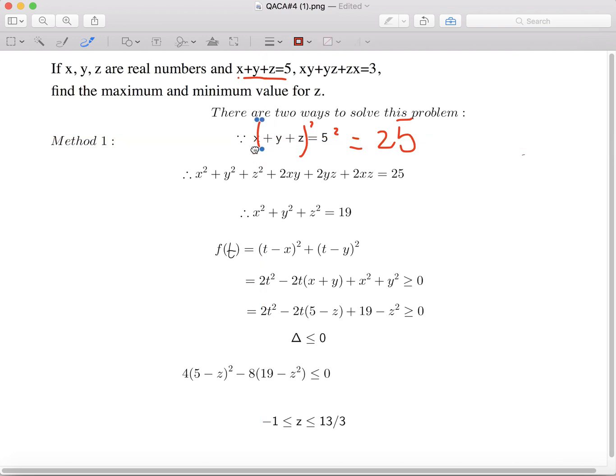If we FOIL the left side, we can have x squared plus y squared plus z squared plus 2xy plus 2yz plus 2xz is 25. We also know that xy plus yz plus xz is 3, which means that 2xy plus 2yz plus 2xz is 6. If we use 25 minus 6, we can have that x squared plus y squared plus z squared is 19.